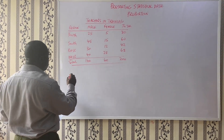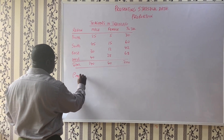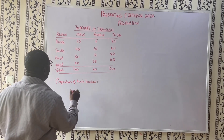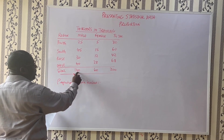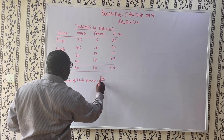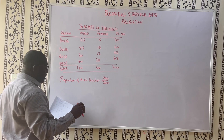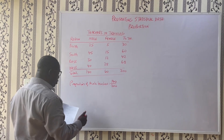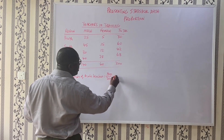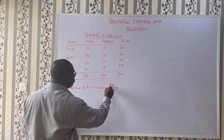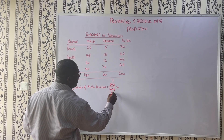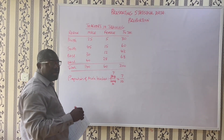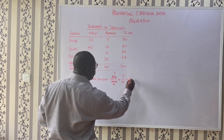Let's start by looking at the proportion of male teachers. We pick the total male, which is 140, divided by the total of 200. Remember, proportion is the relationship between a part to the whole. We can further simplify this: 140 over 200 gives us 7 over 10. The proportion is 7 over 10. We can present the value this way or we can present it in decimal, which will be 0.7.